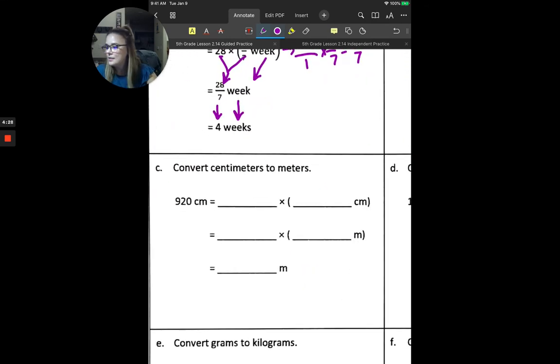Let's take a look at C. So for C, since we're looking at centimeters to meters, and we know that this is going to be in kind of powers of 10, this time we're going to use decimals. So we're looking at 920 centimeters, and we need to convert that to meters. So we can think of 920 centimeters as being 920 times 1 centimeter. Well, if we think back to yesterday, we know that 1 meter is equal to 100 centimeters.